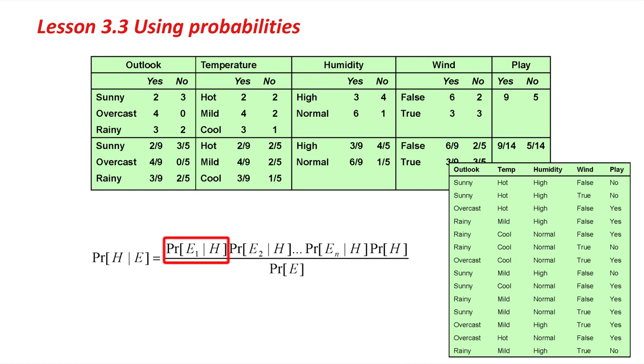That's what we're looking for, the probability of each of these attribute values given a hypothesis H. The next attribute is temperature, and we just do the same thing with that to get the probabilities of the three values hot, mild, and cool under the Yes hypothesis or the No hypothesis. The same with Humidity and Windy. Play, that's the prior probability P(H). It's Yes nine-fourteenths of the time, No five-fourteenths of the time, even if you don't know anything about the attribute values. The equation we're looking at is this one below, and we just need to work it out.